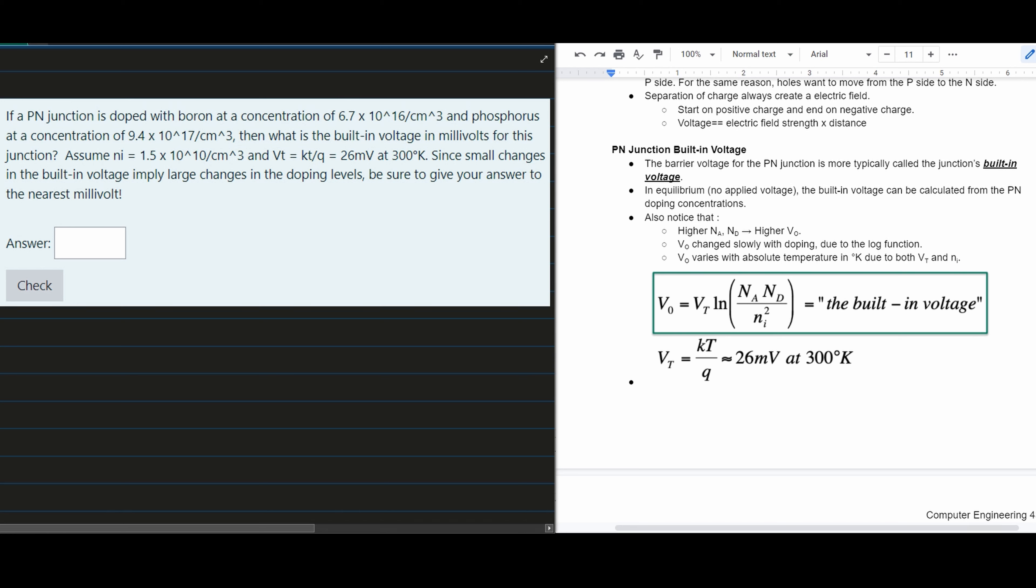For this problem, a P-N junction is doped with boron at a concentration of 6.7×10¹⁶ per cm³ and phosphorus at a concentration of 9.4×10¹⁷ per cm³. What is the built-in voltage in millivolts?